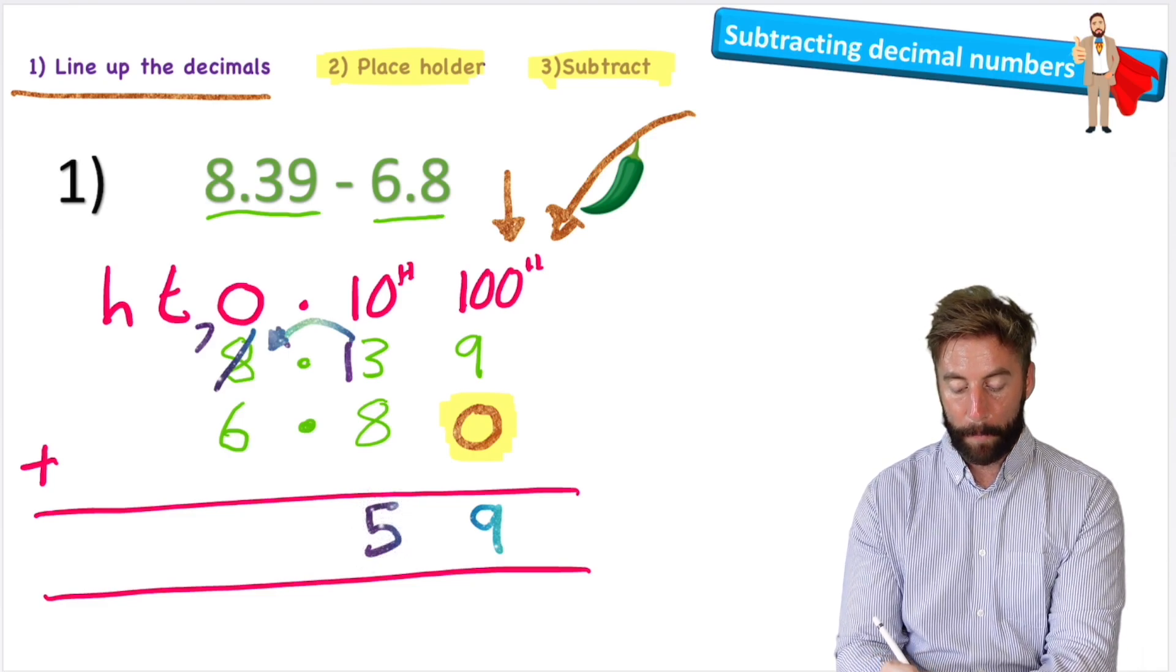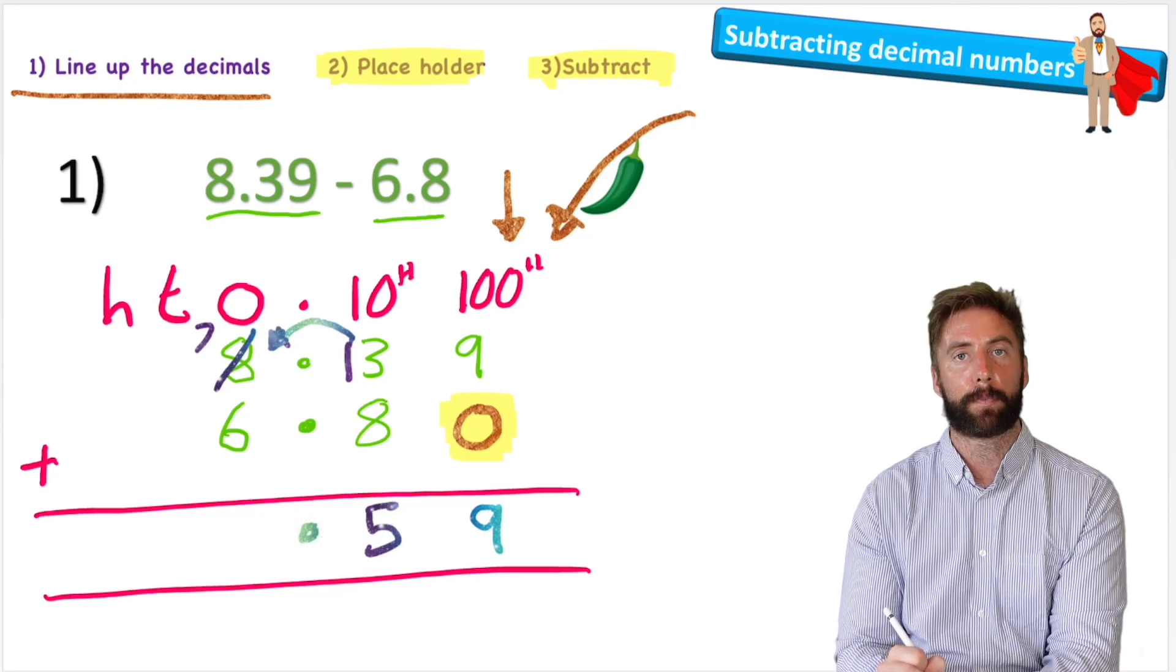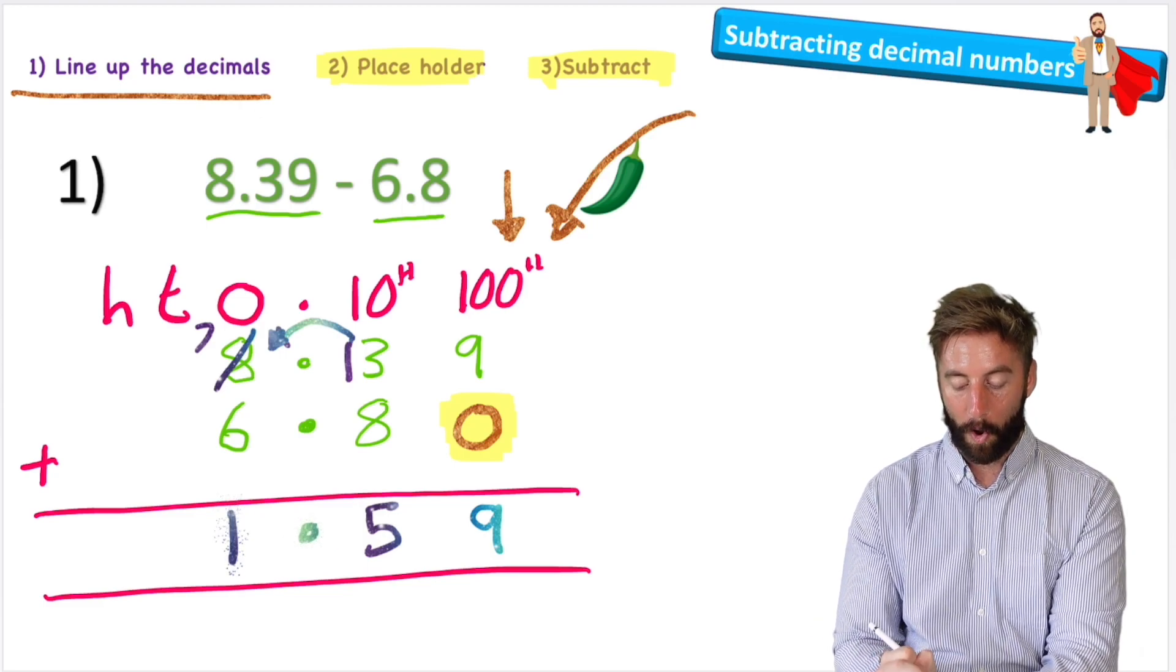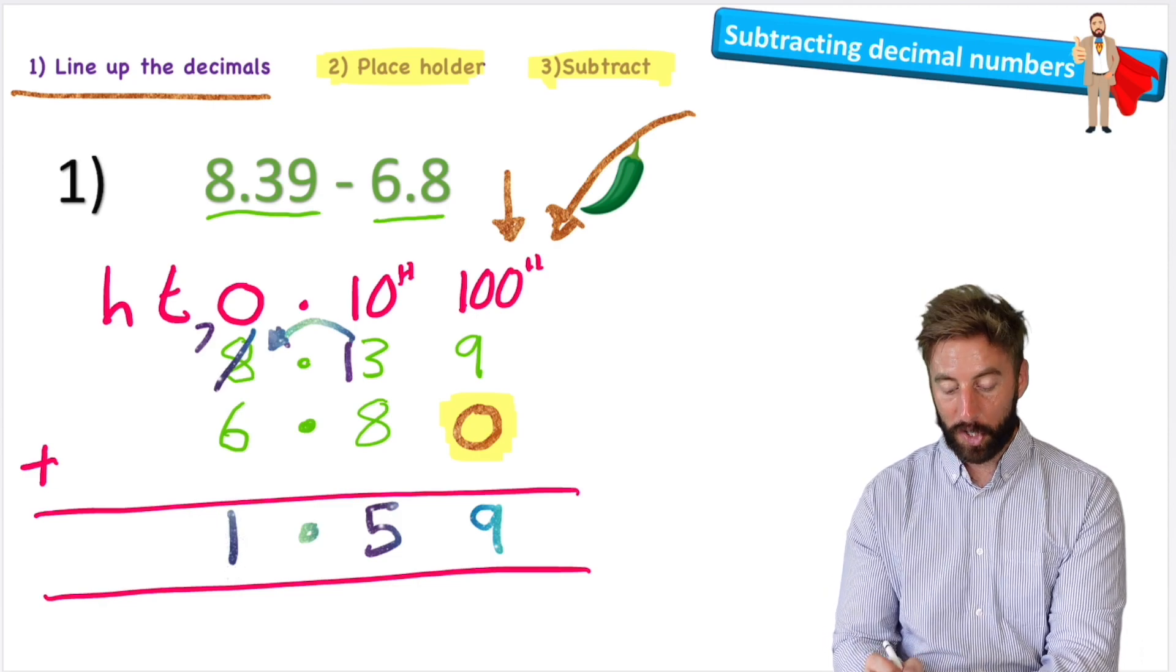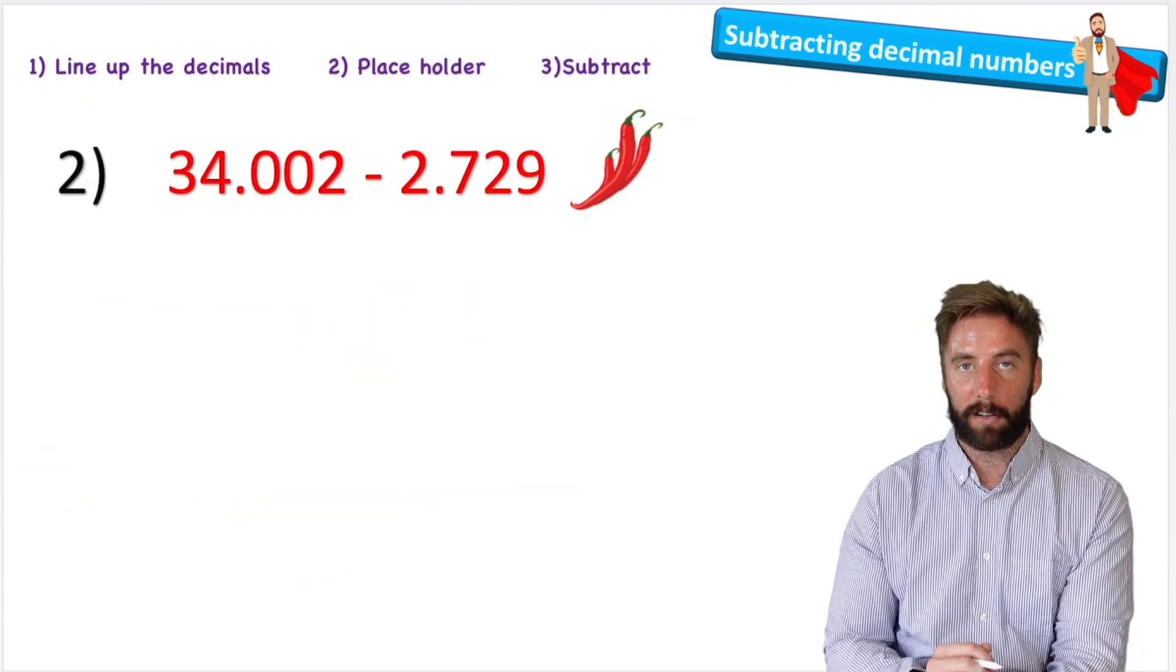Put back my decimal—obviously that's really important—and then seven subtract six is one. So my answer to our first question is 1.59, or one and fifty-nine hundredths.